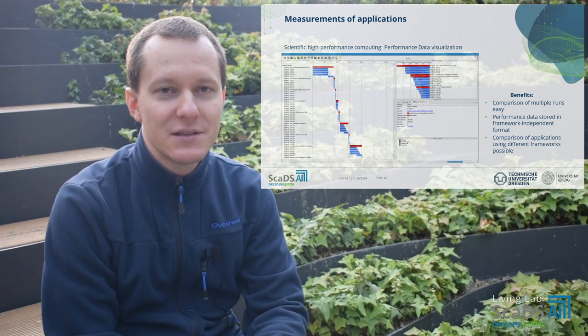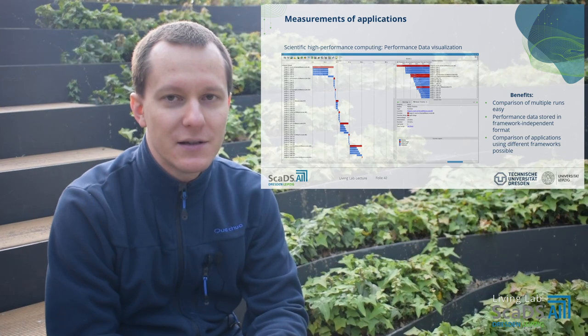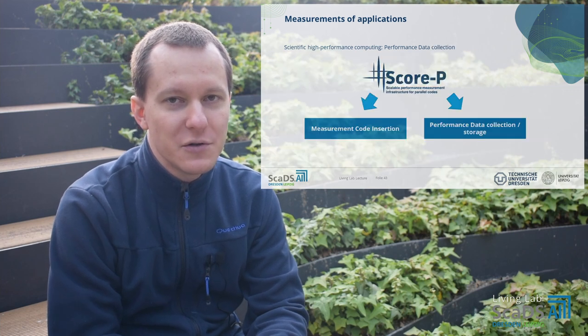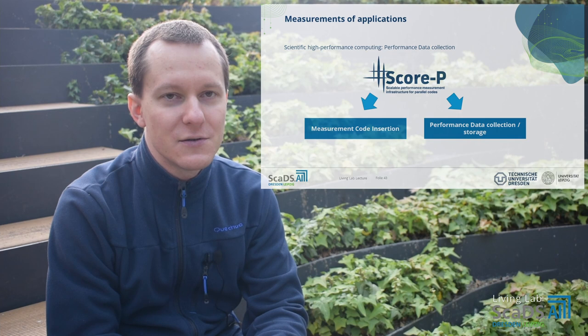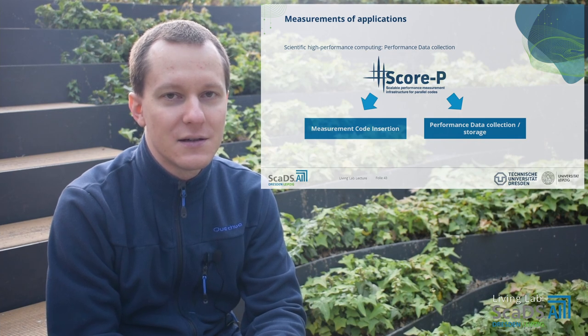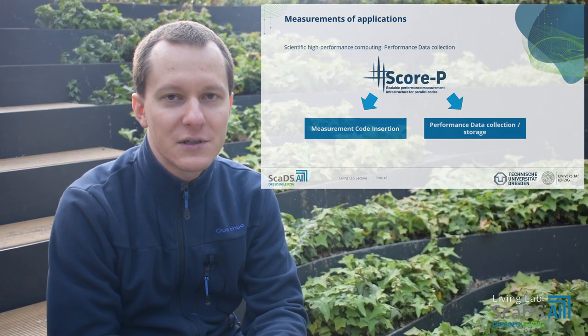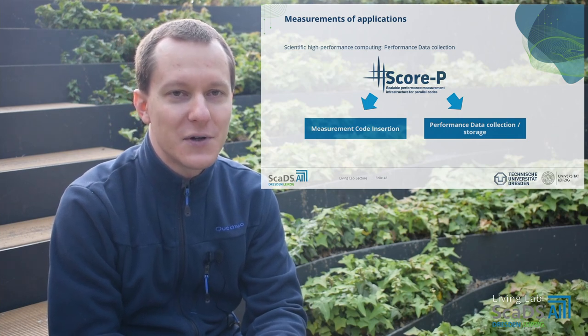That approach, however, does not allow to record more details about an application than is recorded by Spark or Flink itself. When we looked further, another framework was interesting. Score-P allows to insert measurement code into an application and collect performance data. This way, we could even go further and collect more information about the process. However, Score-P could not be used out of the box, as it was created for other application types. In the past, applications for high-performance clusters were written mostly in C, C++ and Fortran, and use other methods to distribute the workload in the cluster, such as the message passing interface, multiprocessing and offloading to accelerators via CUDA or OpenACC.